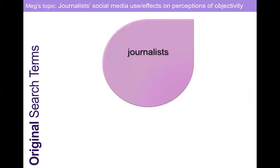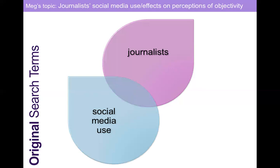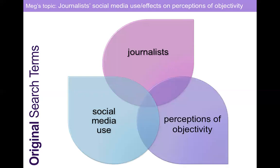So we're going to start by breaking down a topic into a Venn diagram. I'm using Meg's topic — it's totally fine if you've changed your topic, we're just using this as an example. Meg's topic was journalists' use of social media and its effects on perceptions of objectivity. Those go into a Venn diagram: journalists, social media use, perceptions of objectivity. The only problem is when you search for these in EBSCO, you get no results. So we have to figure out a better way to do that.